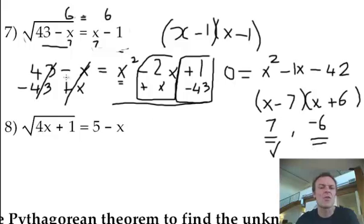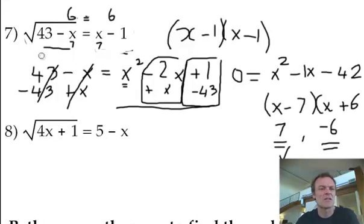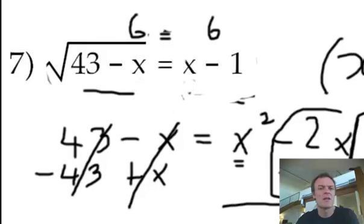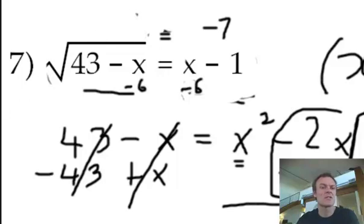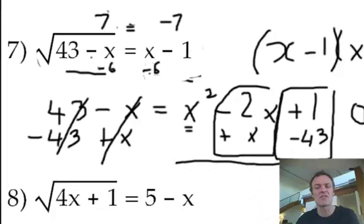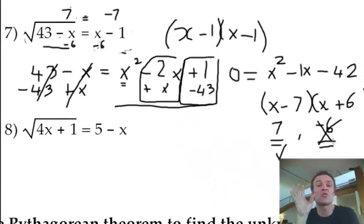Now if you use the negative 6, I'm going to replace the x with a negative 6. I can do the right-hand side easy enough. Negative 6 and negative 1 is negative 7. On the left-hand side, I've got to put it into the square root. 43, negative negative 6 is 43 add 6, which is 49. What's the square root of 49? It's 7, and that is not equal to negative 7. So basically that one doesn't work. Remember with these quadratic solutions, just check to see if they work. So the answer for this is 7.